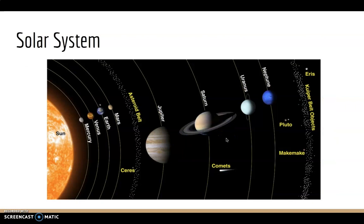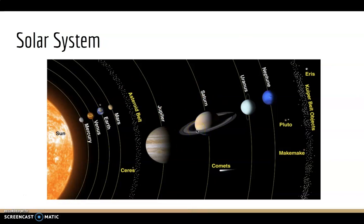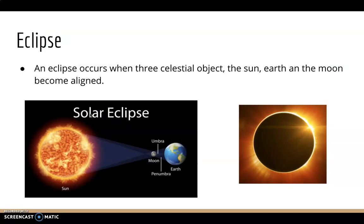As you can see in this picture right here, this is a solar system. Our solar system consists of our star, the Sun, and everything bound to it by gravity. The planets: Mercury, Venus, Earth, Mars, Jupiter, Saturn, Uranus, and Neptune.